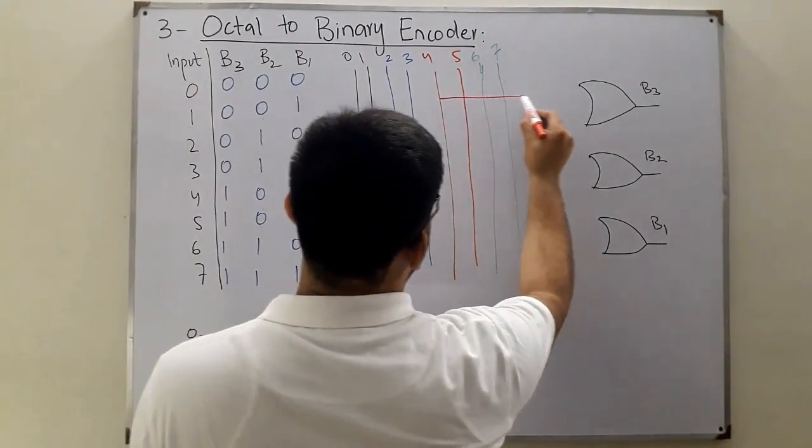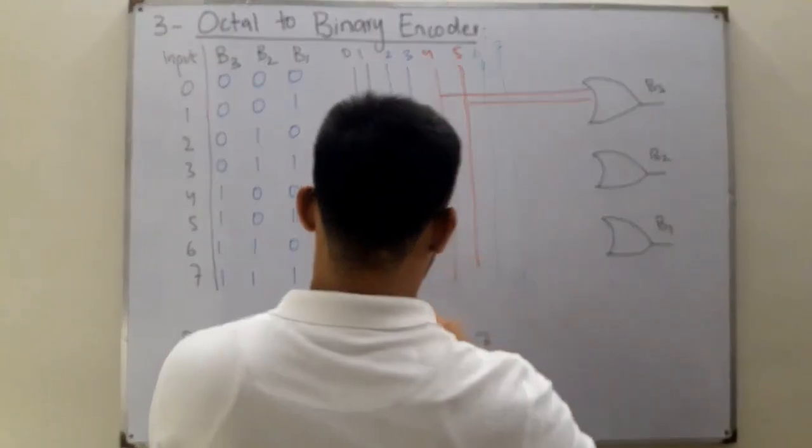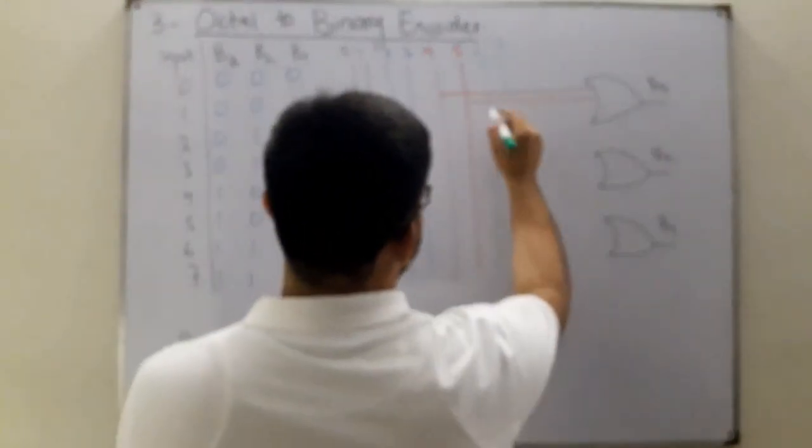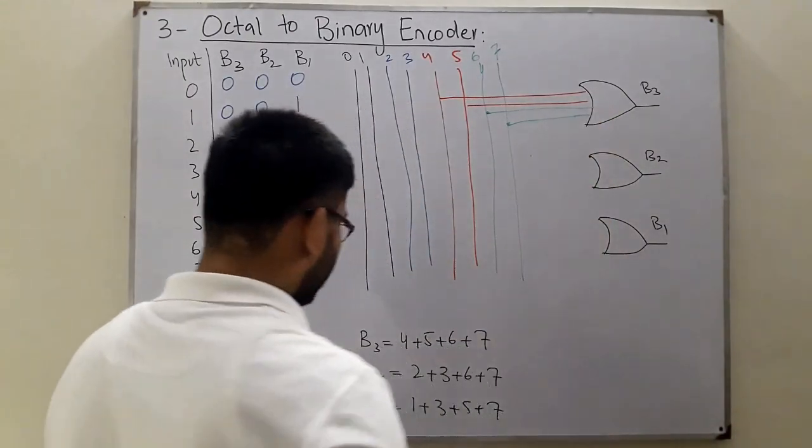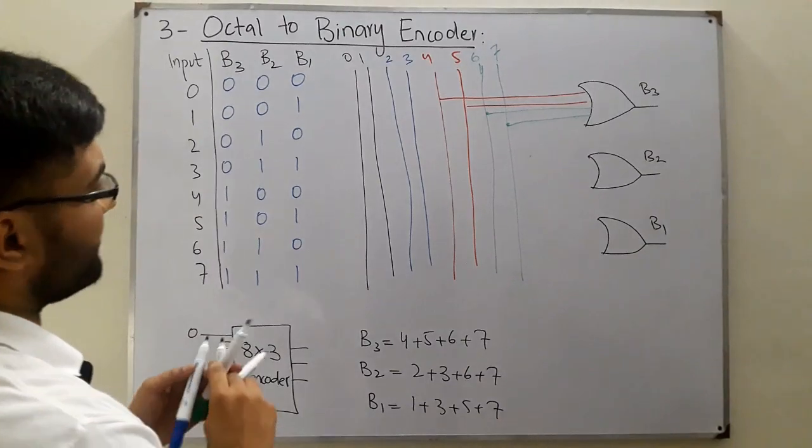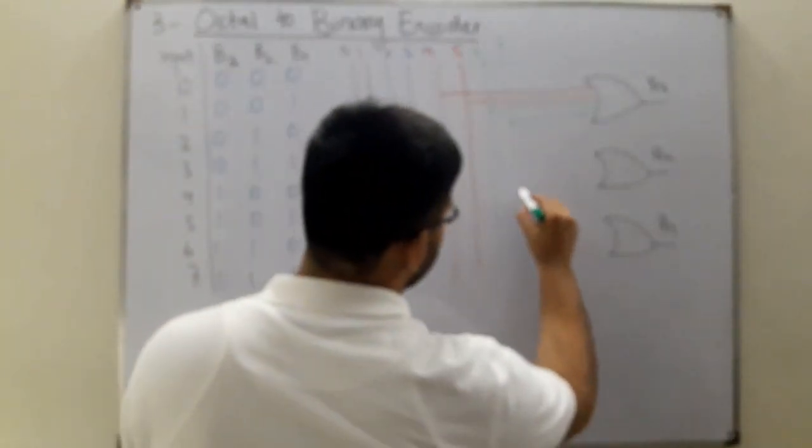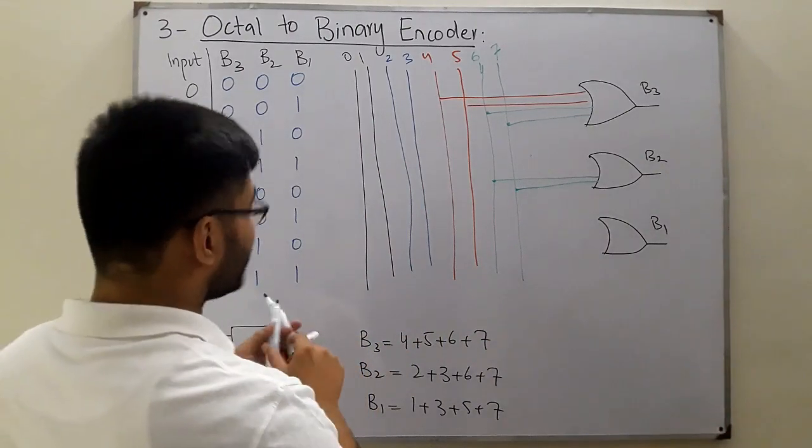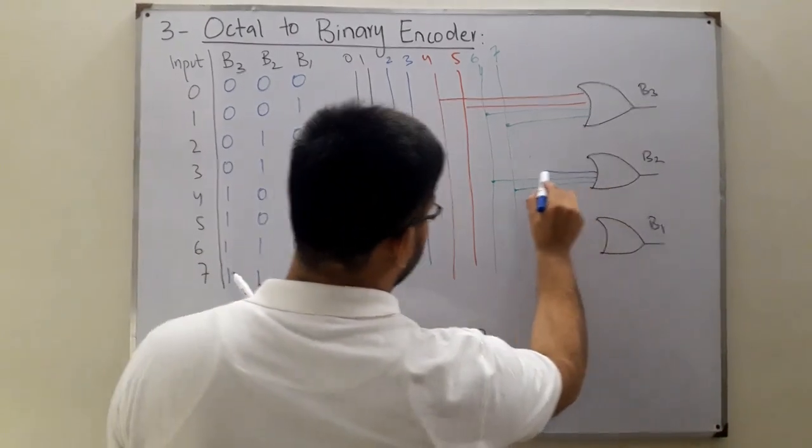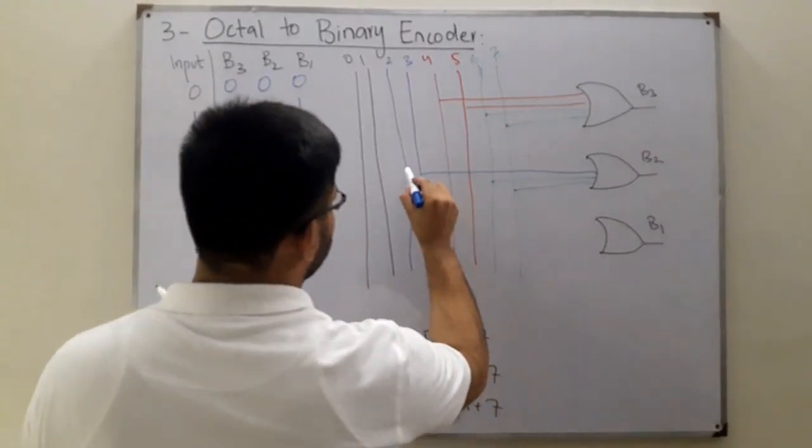b3 is 4 or with 5, 6, and 7, which means the red and the green will come here: 4, 5, 6, and 7. For b2 you have 2, 3, 6, and 7. So 6 and 7 again with the green, and you have 2 and 3 with the blue. So this is 3 and 2 is here.